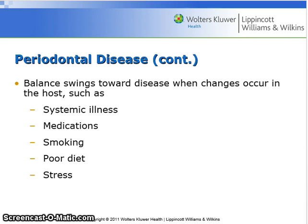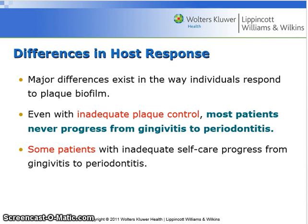The balance swings towards disease when changes occur in the host such as systemic illness, medications, smoking, poor diet, or stress. The major differences exist in the way individuals respond to plaque biofilm. Even with inadequate plaque control, most patients never progress from gingivitis to periodontitis.